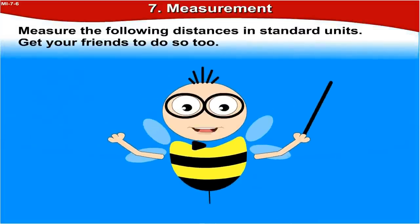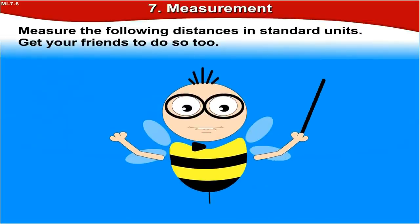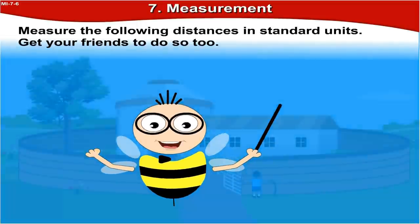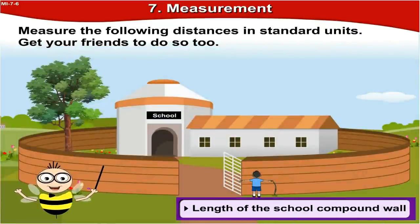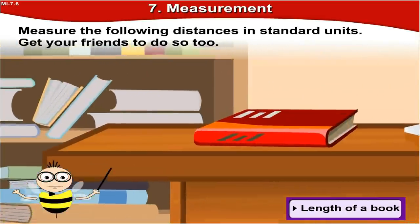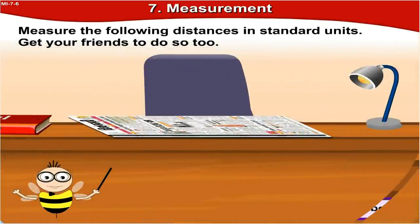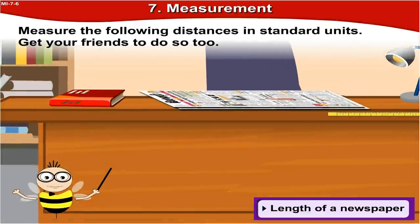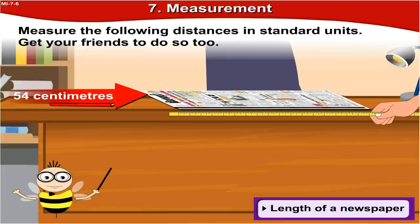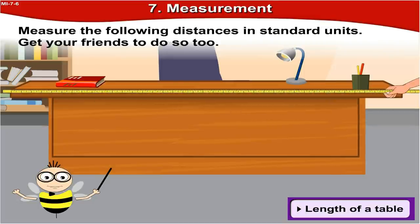Measure the following distances in standard units. Get your friends to do so too, compare your observations, and measure again if there is a difference. Length of the school compound wall — when we measured, it was 10 meters. Length of a book is 28 centimeters. Length of a newspaper, when we measured, was 54 centimeters. Length of a table is 1 meter.